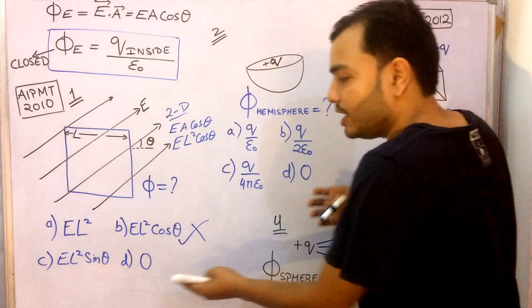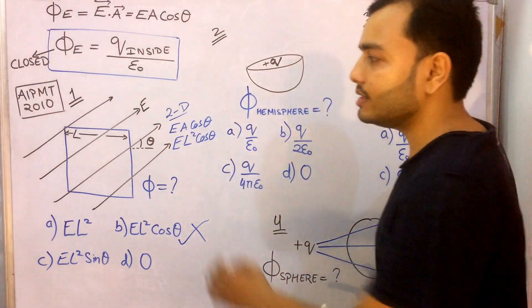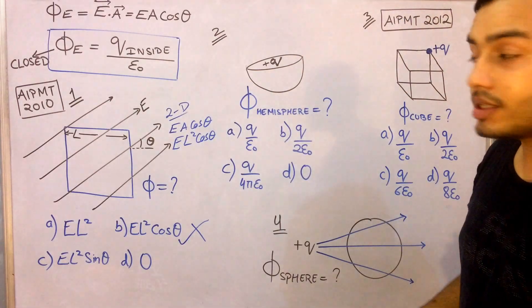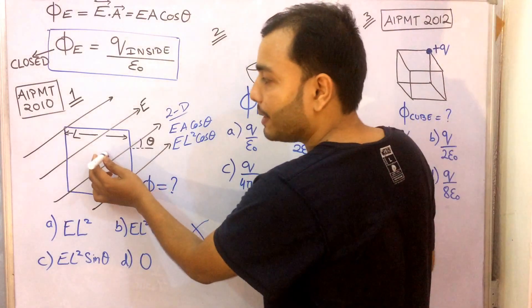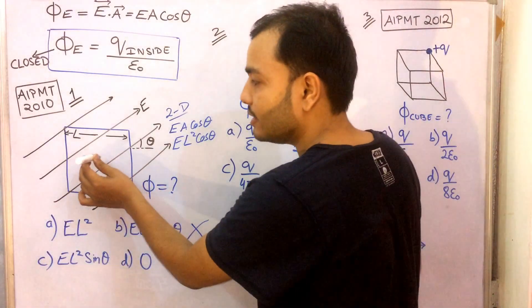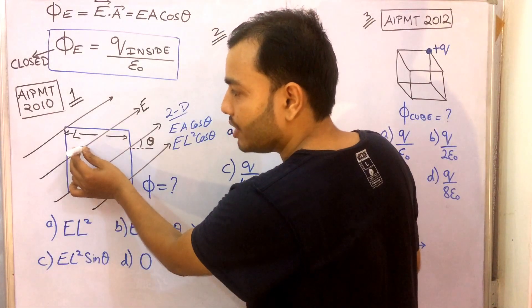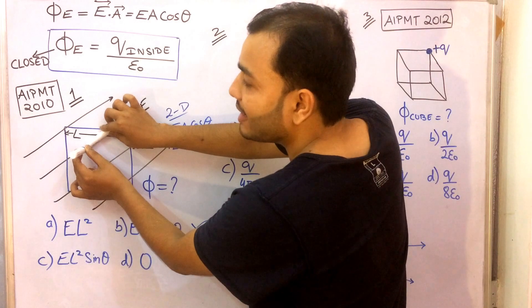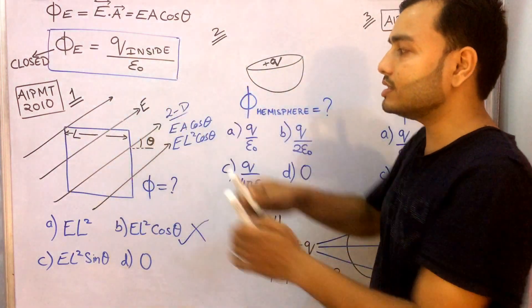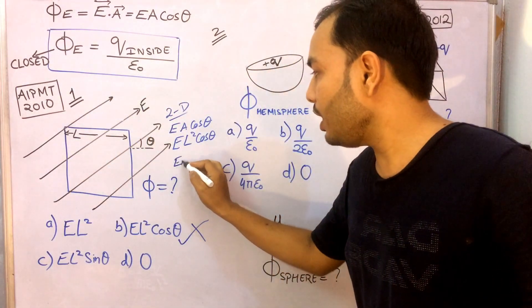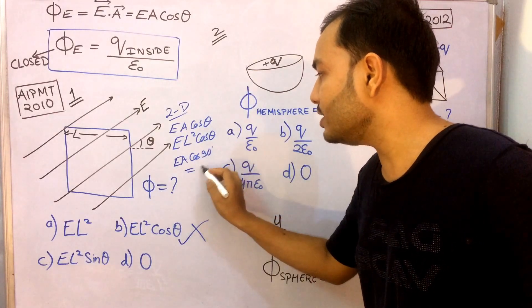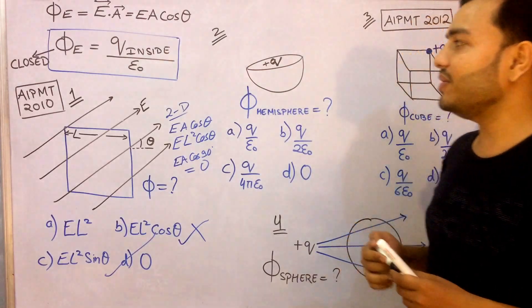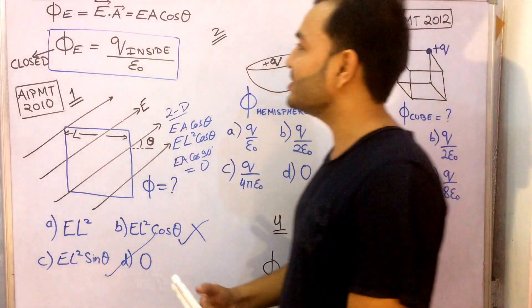The answer is zero. This block is a 2D lamina or 2D plate. The area vector is perpendicular to the surface, and the electric field is also perpendicular to it — so the angle between the area vector and the electric field is 90°. Therefore flux = E·A·cos90° = 0.